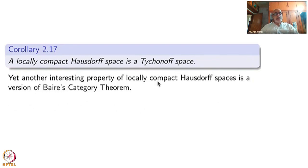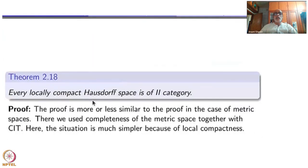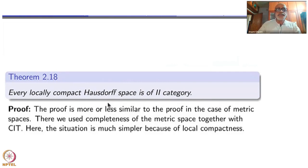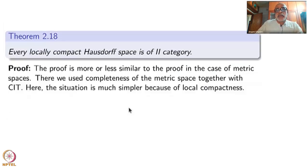Local compactness sits at the juncture of many different concepts in topology. The next result is the Baire category theorem for locally compact spaces: every locally compact space is second category, i.e., it is a Baire space. This result was proved for complete metric spaces in part 1; the proof here is more or less similar, and in fact simpler because of local compactness.